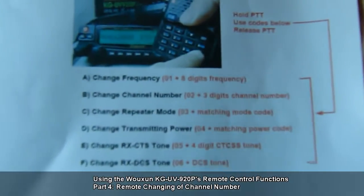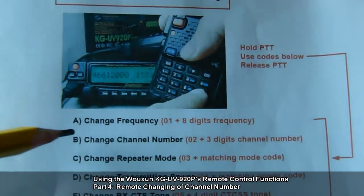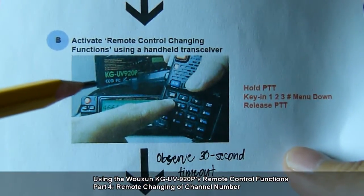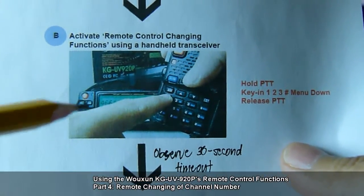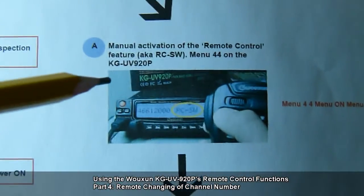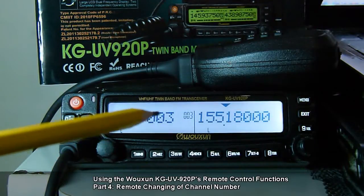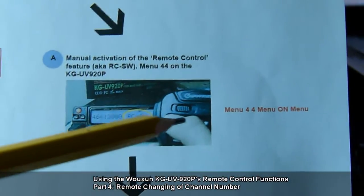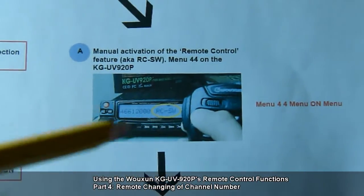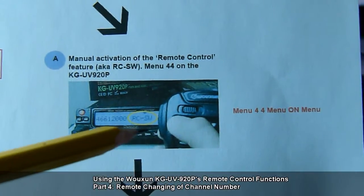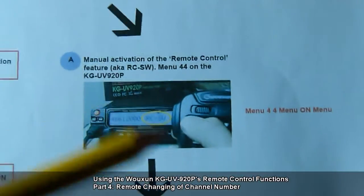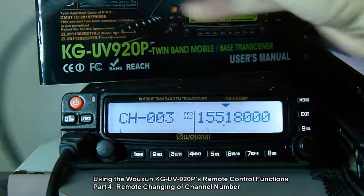Going back to the flowchart, 3B can only be accomplished after doing procedure B, which is remote control changing. Depending on the state of the KG-UV920P, we can only do this after completing procedure A. Since we are still in normal communication mode, we still have to do procedure A. To do it: hold the SP mic, key in menu 44 to shift to RCSW function, press menu again to enter the selection, choose on, and confirm with menu.